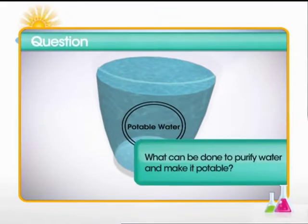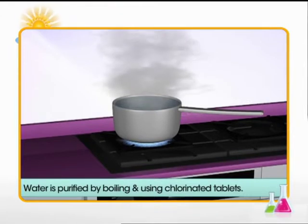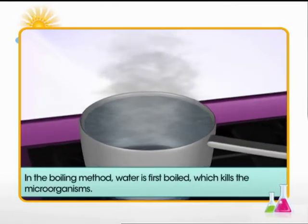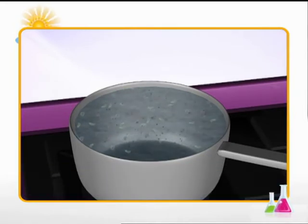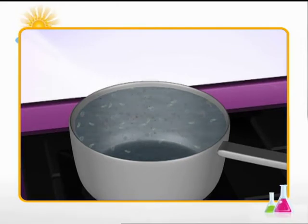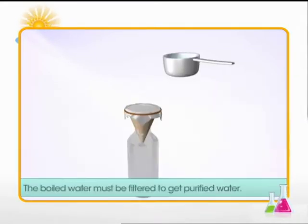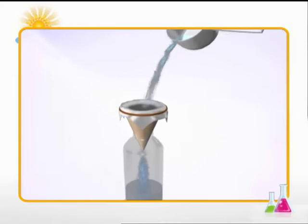What can be done to purify water and make it potable? Water can be purified by various methods, such as boiling and using chlorinated tablets. First, let us learn about boiling. When water is boiled, microorganisms in the water get killed. However, there may still be a few impurities in the water, such as dust. Also, as the boiled water starts cooling, some deposits or scum can form in the water. These can be harmful if drunk along with the water. So after boiling, the water must be filtered. This will remove impurities such as dust and any scum or deposit that has formed.